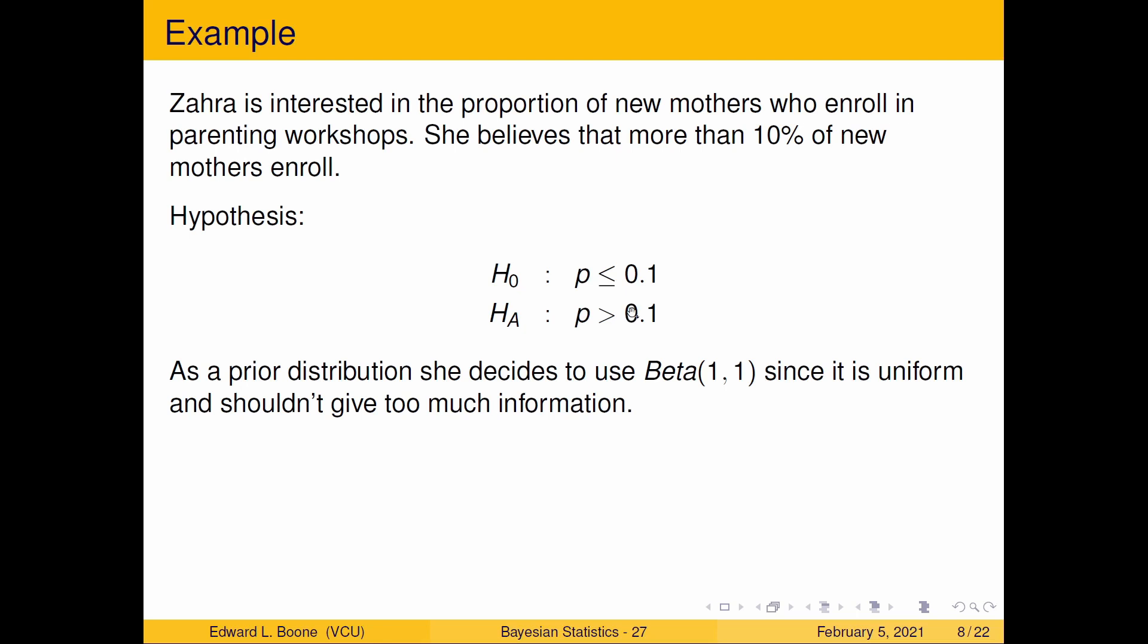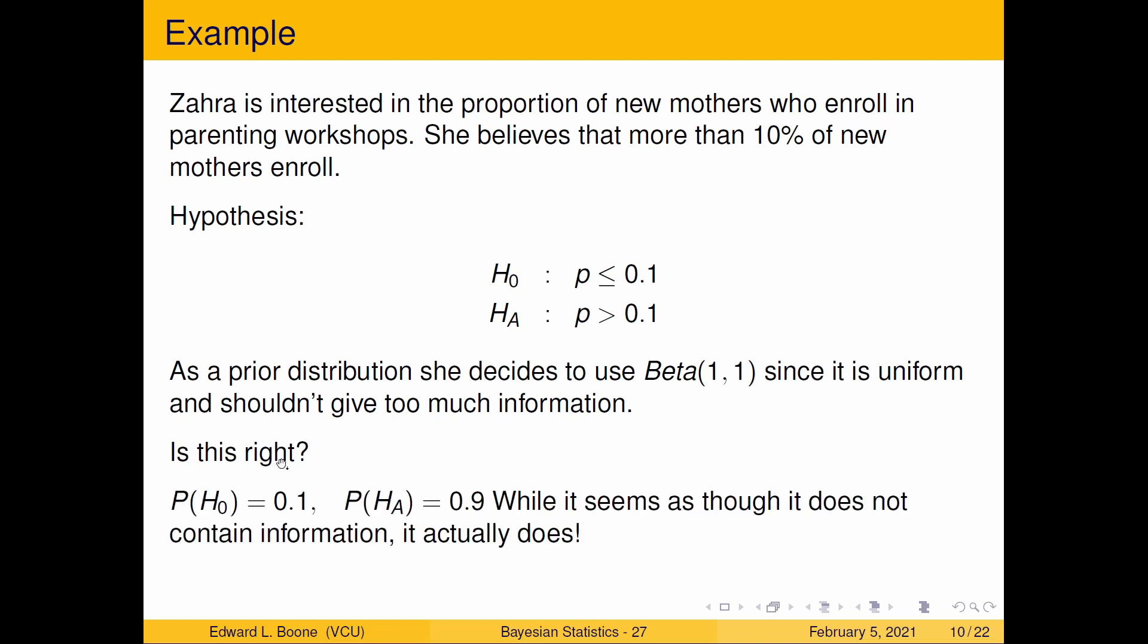But is that really true? If you calculate this, the probability of H naught is 0.1, the probability of H_A is 0.9. This is before we've ever done any data collection. Just by setting that prior, we've already biased the answer towards H_A considerably. We're not thinking about the prior distribution as imparting any information because we're saying it's uniform, but it really does impart information.